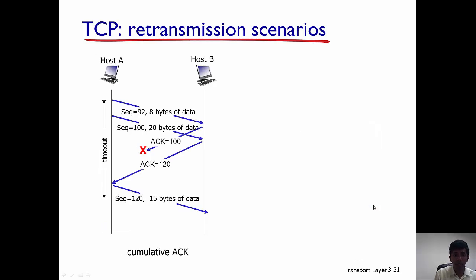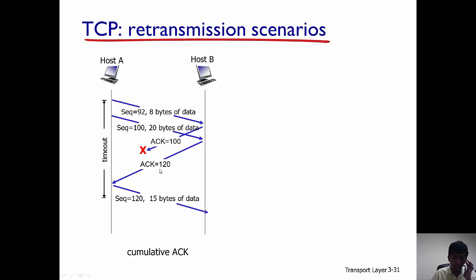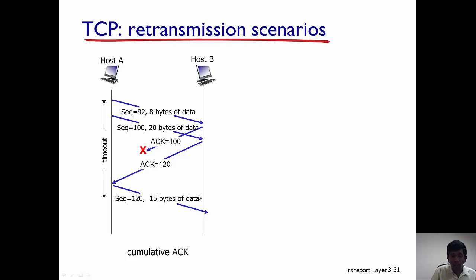In the third scenario, A sends a segment to B with sequence number 92 and 8 bytes of data, and the acknowledgement from B gets lost. In the meantime, A sends another segment with sequence number 120 bytes of data, and that acknowledgement reaches A before it times out. Acknowledgement equal to 120 indicates to A that the earlier acknowledgement equal to 100 must have gotten lost, but A does not care because the acknowledgement is cumulative — it knows B received all bytes up to 119 correctly. So A does not retransmit sequence 92; instead it sends the next segment with sequence number 120.